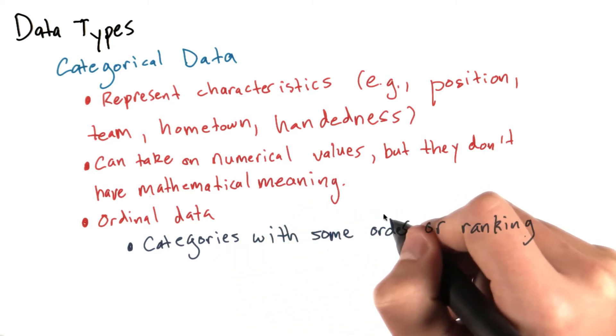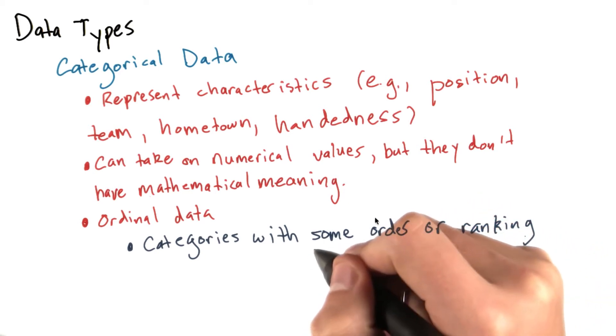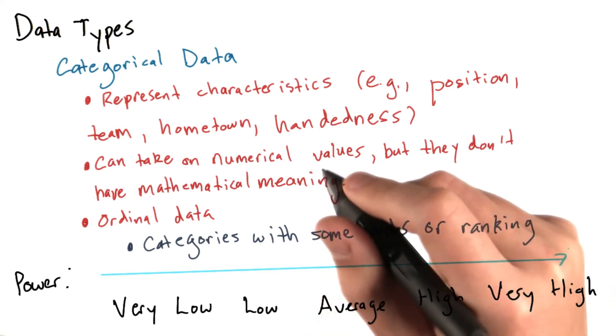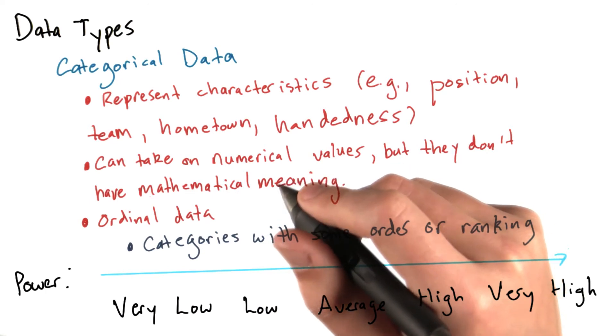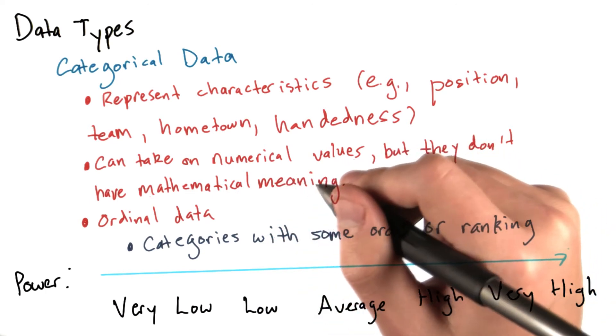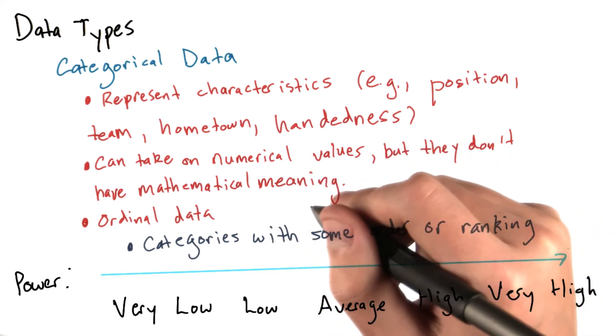For example, a scout might rank a baseball player's power on a scale from very low to very high. Another example is that you might give a movie anywhere between one star and five stars, and these might be ordinal categories.